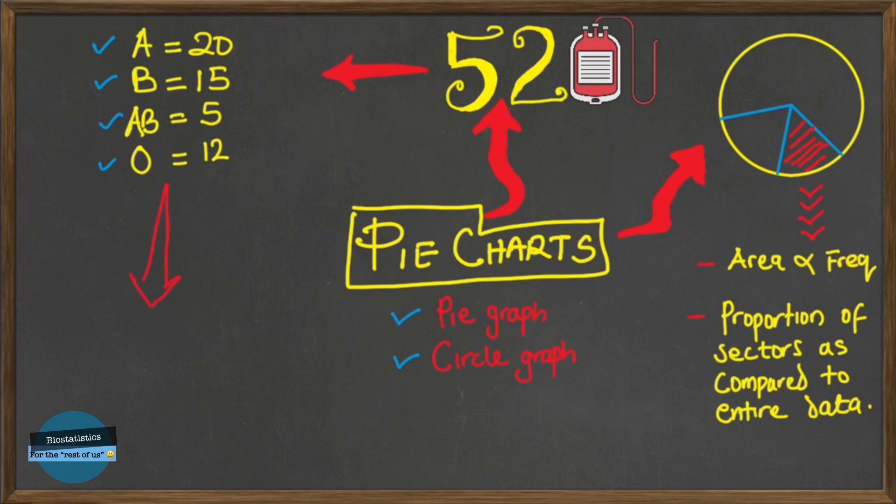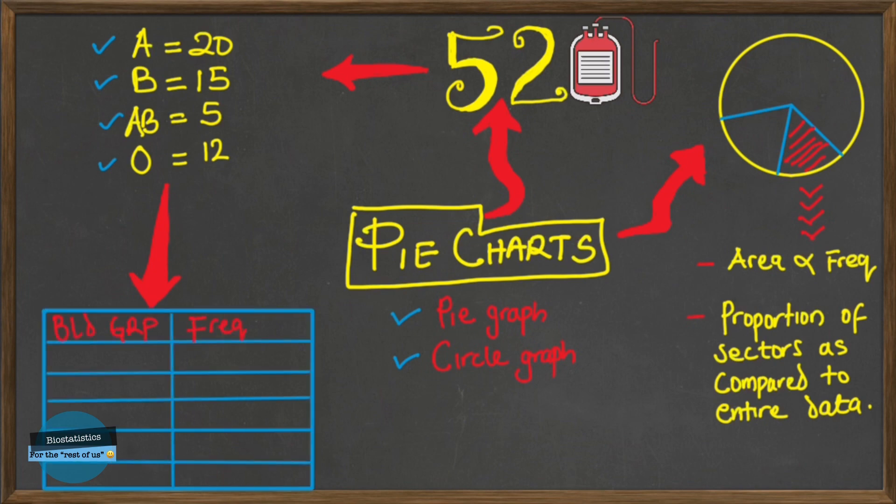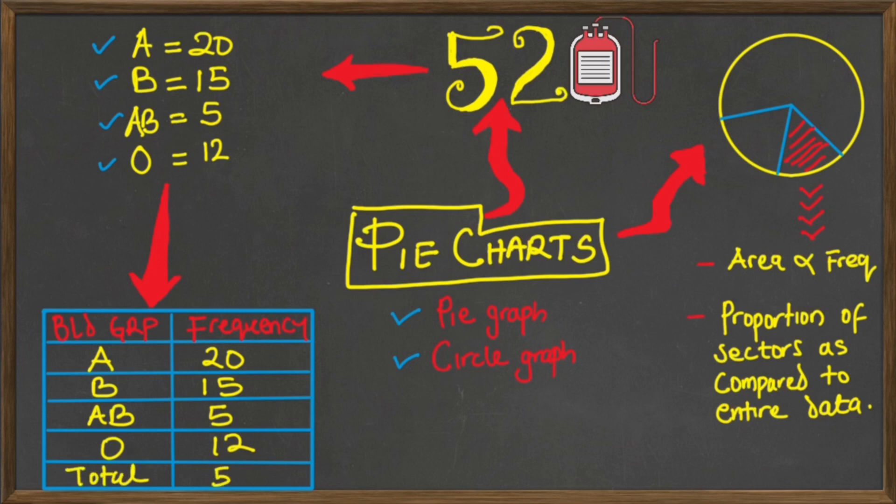This data can easily be represented in a simple frequency table like this. We have blood group and then the frequencies. A had a frequency of 20, B had a frequency of 15, AB 5, and for O the frequency was 12. This will give a total of 52.